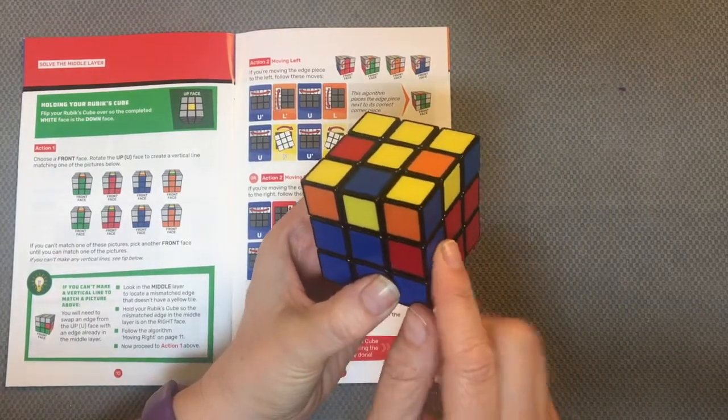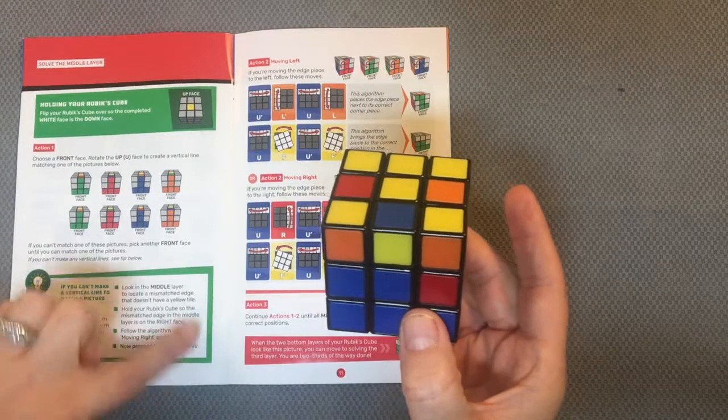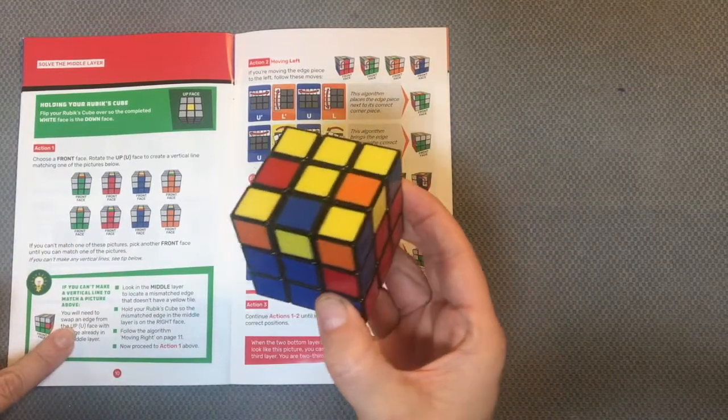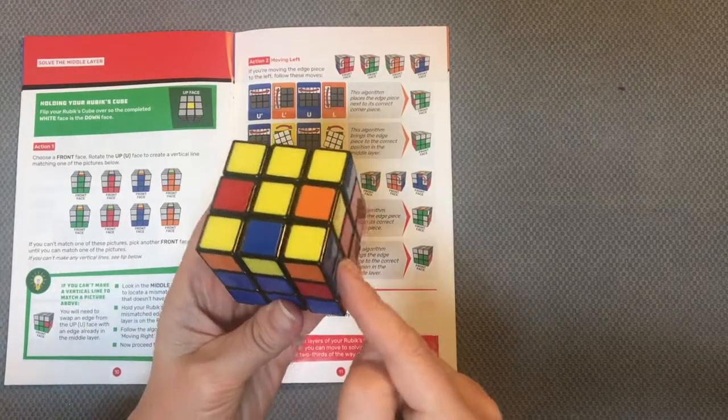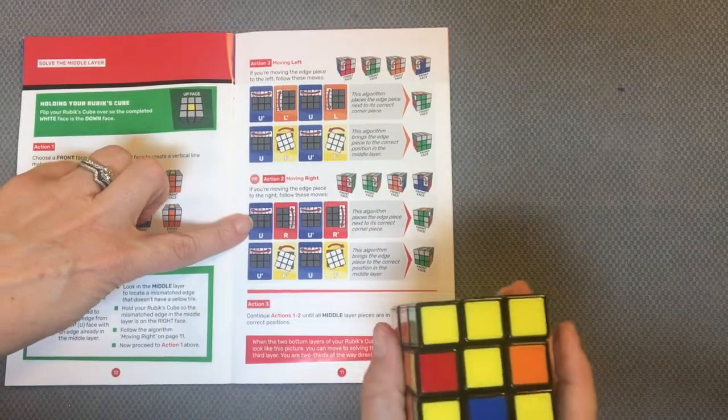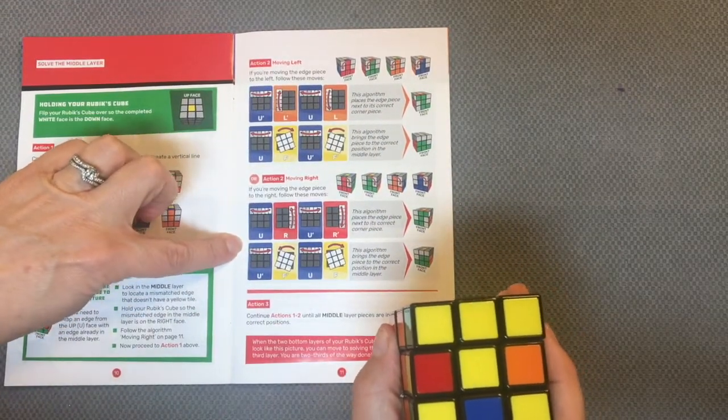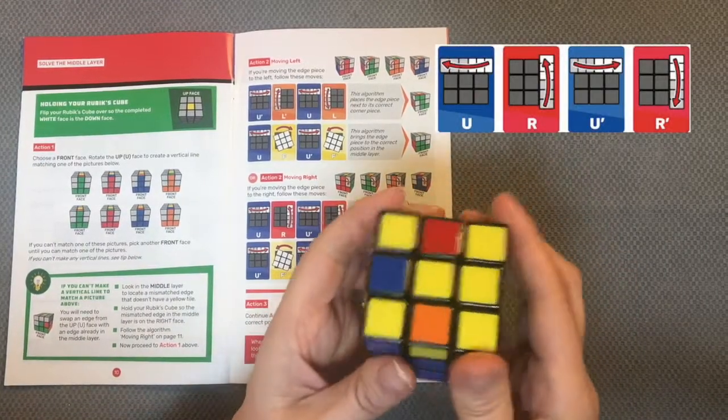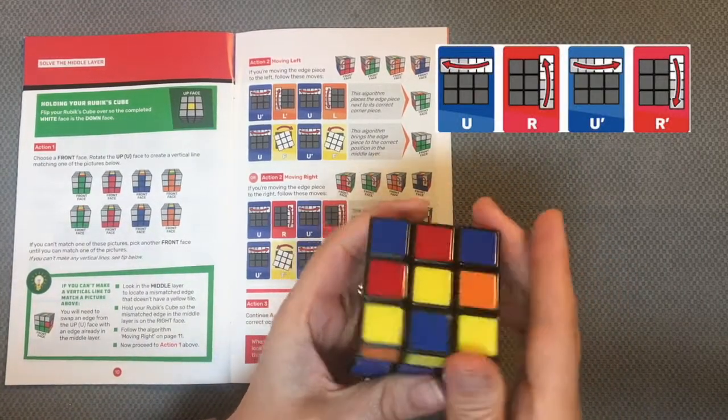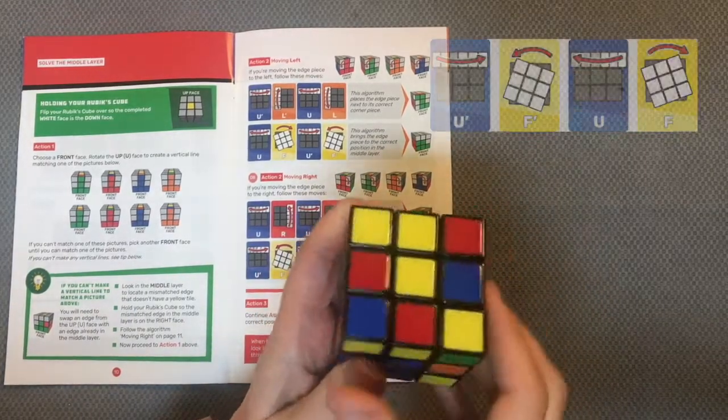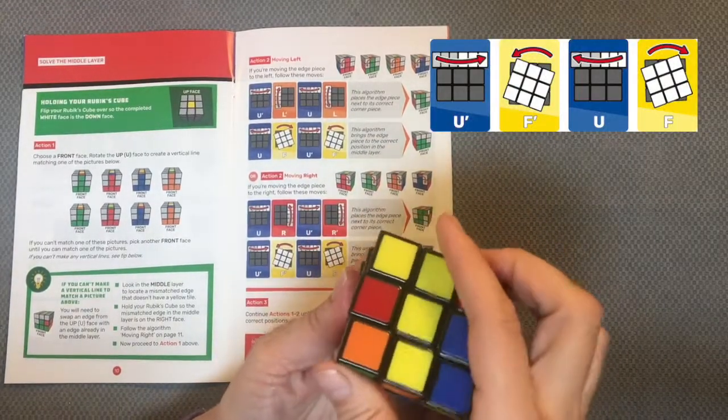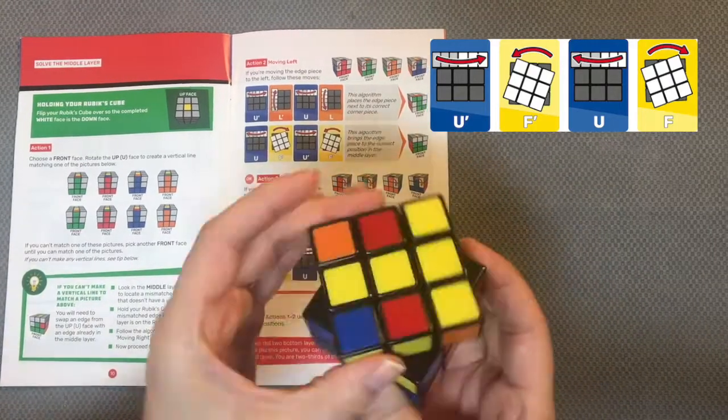Notice here I have an edge piece that needs to be flipped and there's a note down here at the bottom of page 10 that tells me to make sure that the mismatch edge, which is this blue one, is on the right face. Now I want to run this algorithm to move right: up to the left, right away, up to the right, right towards me, up to the right, front to the left, up to the left, front to the right.